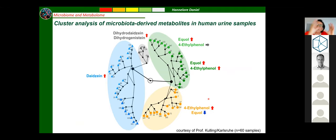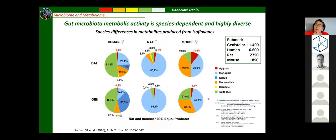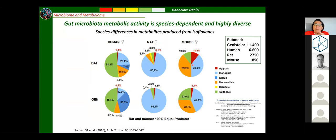A nice study by Sabine Kulling from Karlsruhe showed in 60 volunteers the pattern of different urinary metabolites derived from different metabolic activity of the gut microbiota. They also compared animals and humans — men and women, and male and female rats. Only 1% of the compound delivered orally appears in plasma unchanged; the rest are metabolites. Critically, all those metabolites produced by the microbiome are completely different in rats and mice versus humans. Half the scientific literature on phytoestrogens uses animal studies — be careful, as animals produce completely different metabolites.